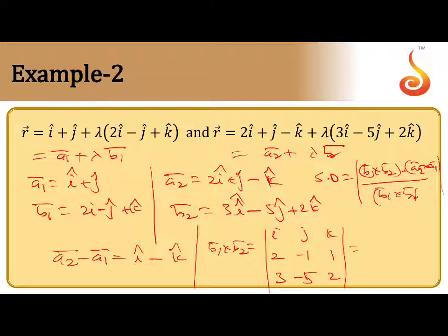Now let us take b̄₁ × b̄₂. This will be î into (-2 - (-5)), which is 3, minus ĵ into (4 - 3), which is 1.